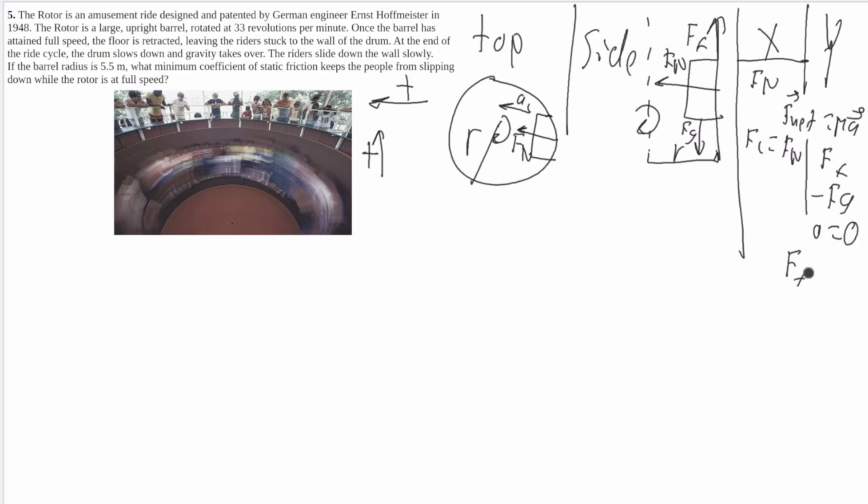So you'll get force of friction minus force of gravity is equal to zero. So just adding force of gravity to one side you'll get force of friction is equal to force of gravity. Now if you remember the force of friction is equal to mu FN and force of gravity is equal to mg. And this is the mu you're finding so you can divide the FN to both sides and you'll get mu is equal to mg over FN.